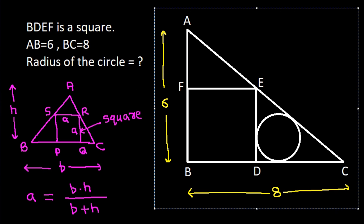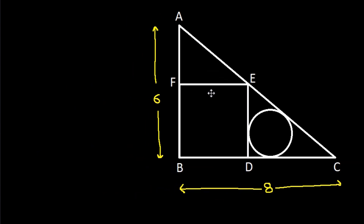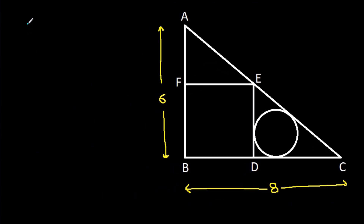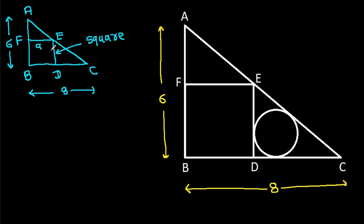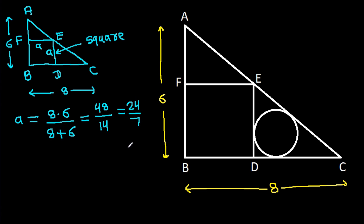And here, in triangle ABC, BDEF is a square. The base is 8 and the height is 6. Suppose the side length of the square is A, then A will be equal to 8 times 6 divided by 8 plus 6. That is 48 by 14, which will be 24 by 7. So A is equal to 24 by 7.